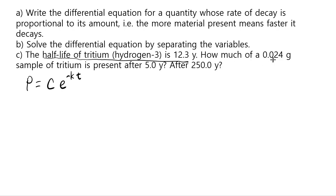And it says half-life of tritium is 12.3 years. How much of 0.024 grams of sample of tritium is present after 5.0 years and after 250 years? So how do we solve this? Now, see that this formula actually has two unknowns, c and k. Therefore we first have to figure out what c and k are. And from this, we see that initial value p of 0, the amount of tritium in the sample at time t equal to 0, is 0.024 grams.